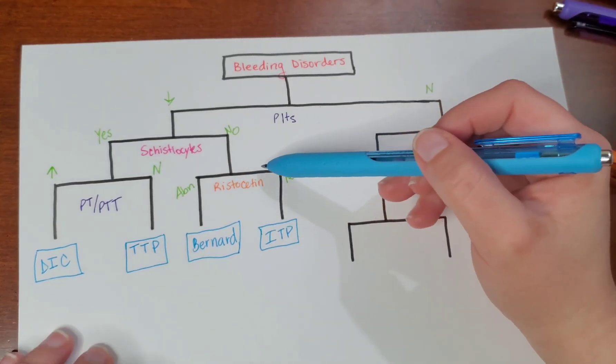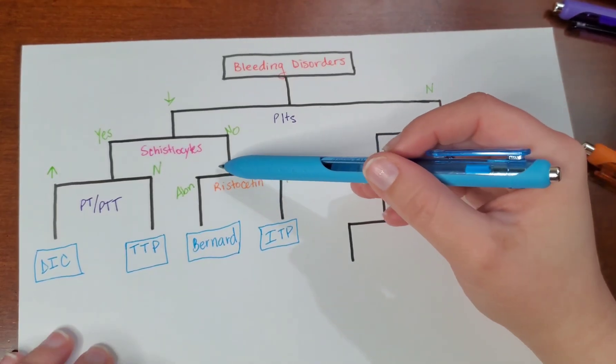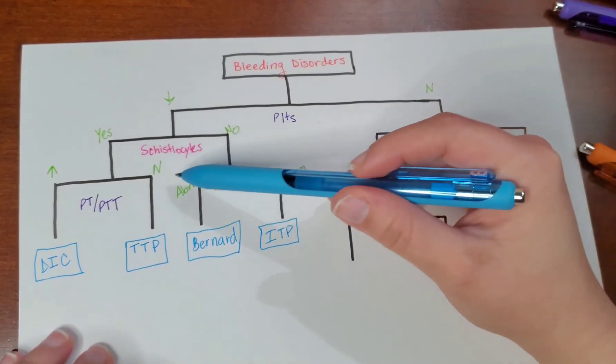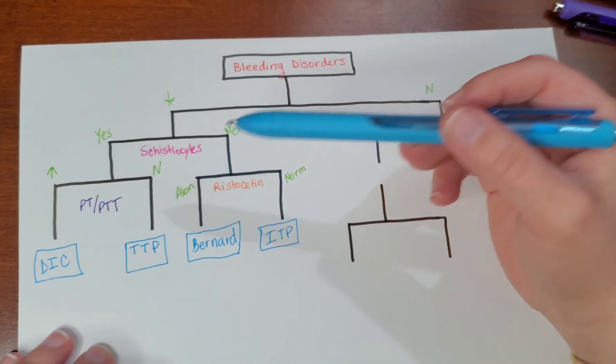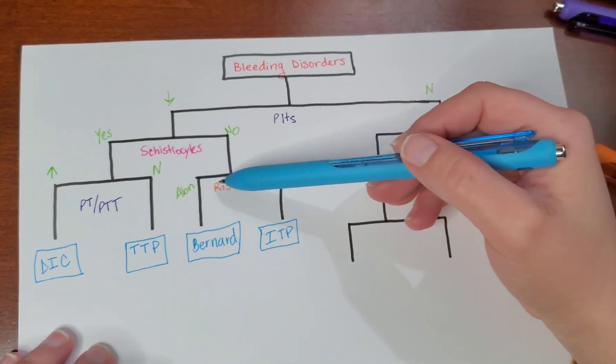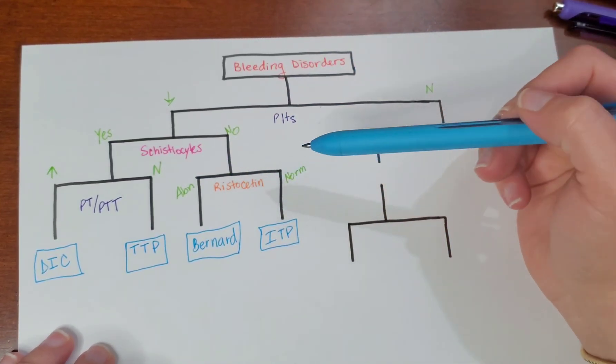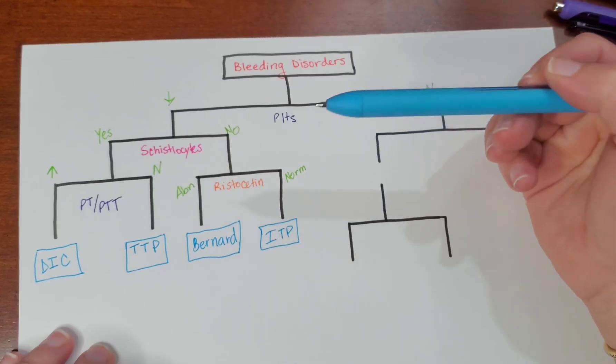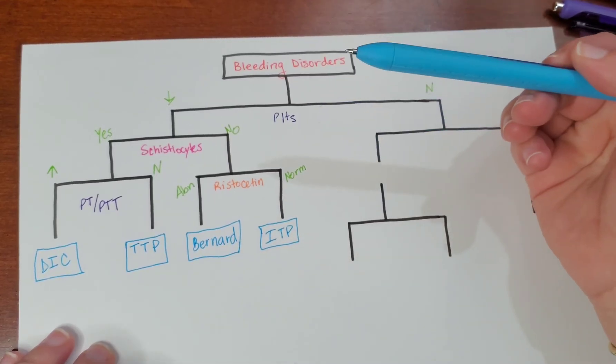The way you'll know that the ristocetin test was abnormal is that they will tell you that even though they added ristocetin, the platelets were still unable to aggregate.